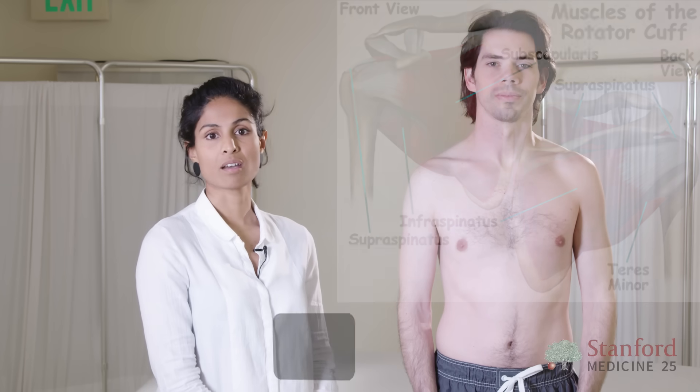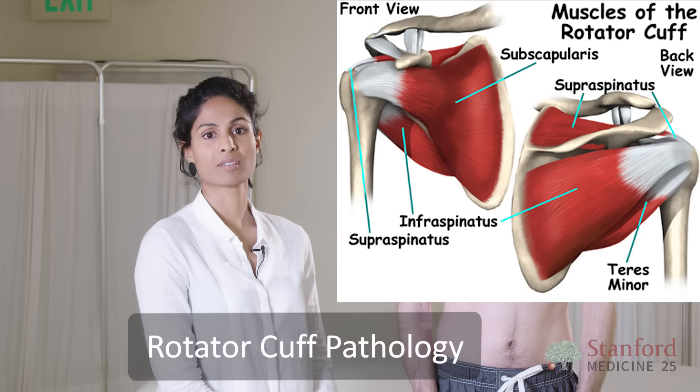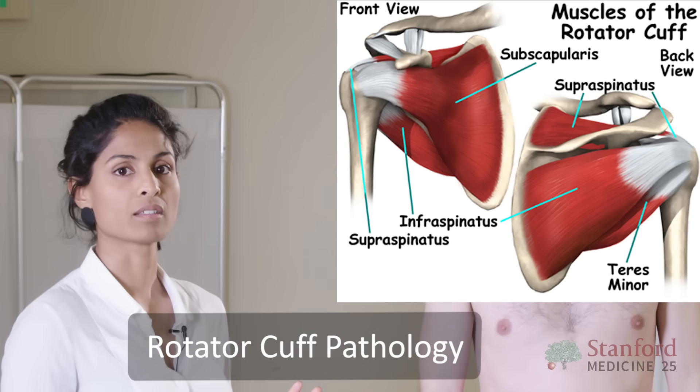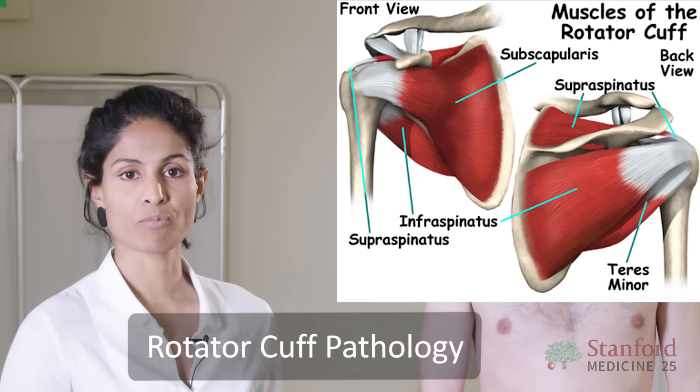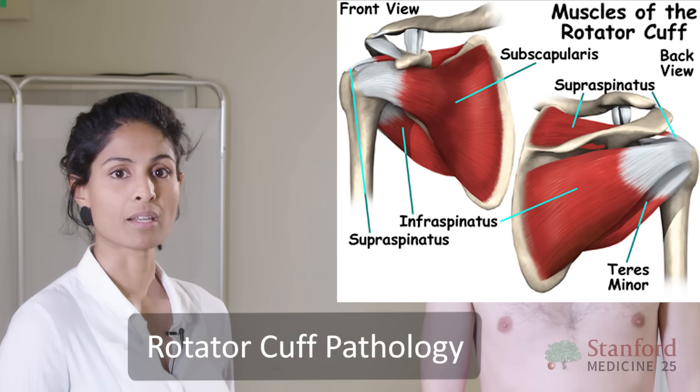Next I'm going to show you targeted clinical examinations of the shoulder joint for the most common pathologies. I will start with the rotator cuff as it is the most common diagnosis. We will test the four rotator cuff tendons: supraspinatus, infraspinatus, teres minor, and subscapularis.